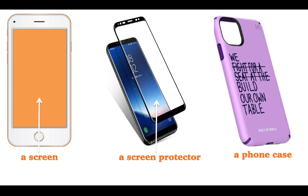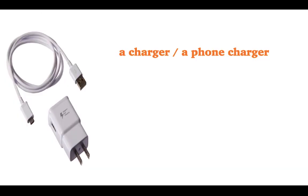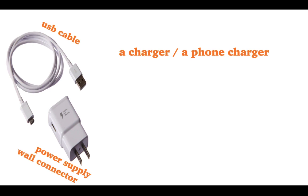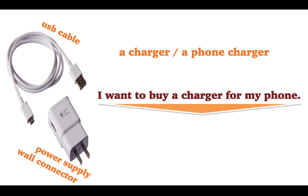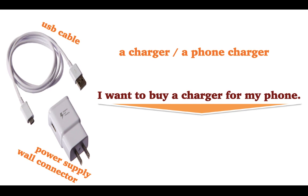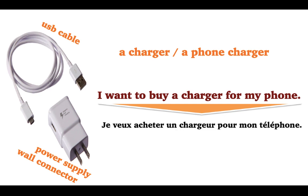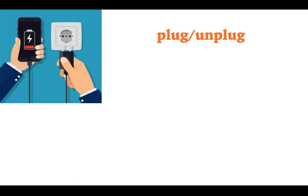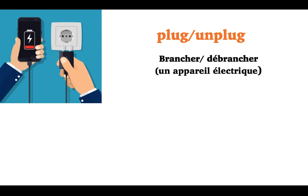A screen. Screen protector. A phone case. A charger. A phone charger. USB cable. Power supply. Wall connector. Example: I want to buy a charger for my phone. Plug. Unplug.